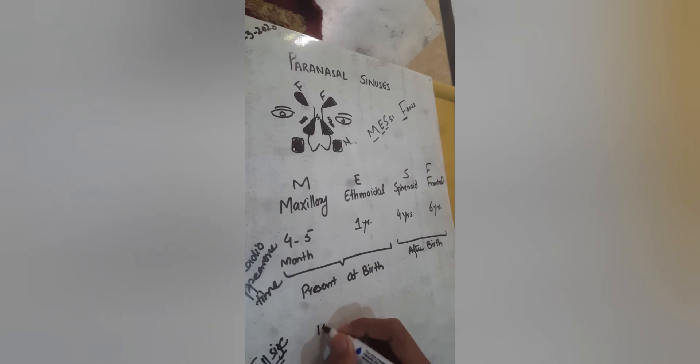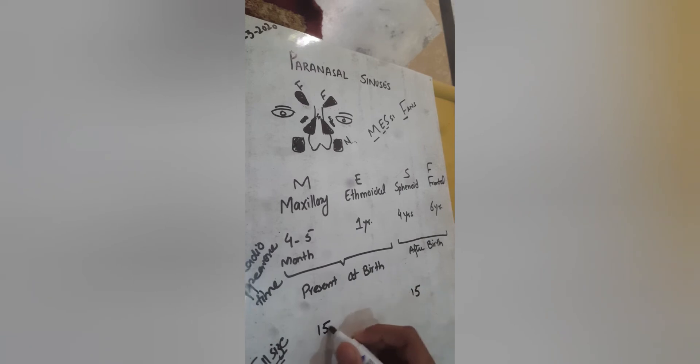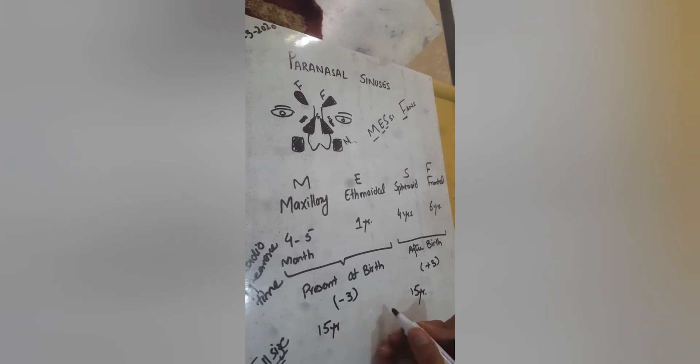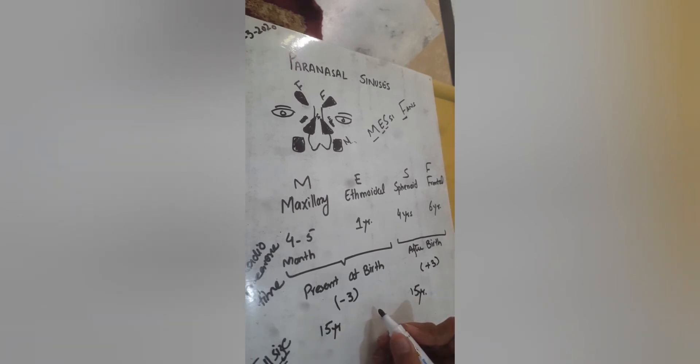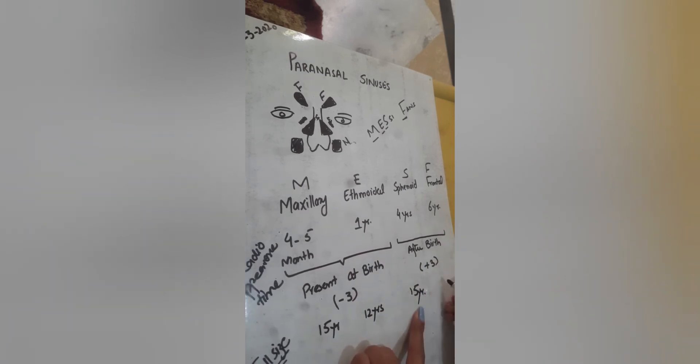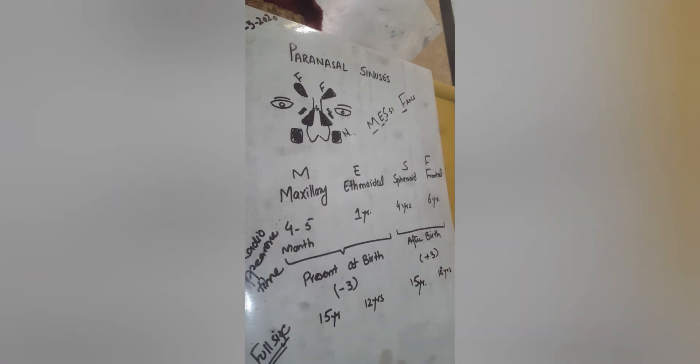The full-size time at which they reach the full size is 15 years for the maxillary one and 15 years for the sphenoidal one. Another trick you should remember is to do plus or minus 3 from this 15. If we do minus 3 from 15, it's 12 years - at 12 years the ethmoidal sinus reaches its full state. And if we add plus 3, it's 18 years for the frontal sinus to reach its full state.